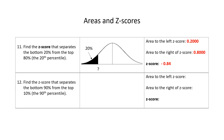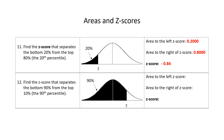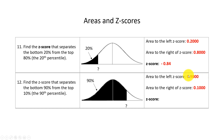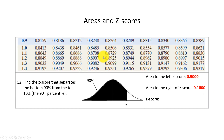Number 12: find the z-score that separates the bottom 90% from the top 10%. The area to the left is 90% and the area to the right is 10%, so the z-score must be positive. In Table 5, we find the closest value to 0.9000 in the body of the table. The closest value gives a z-score of 1.28, meaning 1.28 separates the bottom 90% from the top 10%. Thanks for watching.